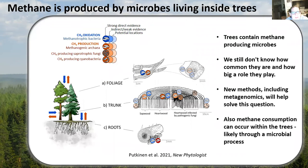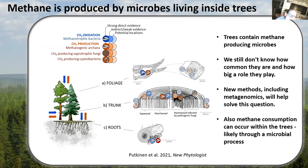Finally, beside methane being produced in soil and exported through trees, and methane produced with sunlight in foliage, we also know that methane is produced by microorganisms that live within trees. These methane-producing microorganisms can be found in the hardwood of trees, particularly in trees that have been infected by pathogens. Interestingly, we have found very similar microorganisms in the foliage of trees. We don't yet know how common they are or how big a role they play, but we are working hard to develop new methods, including captured metagenomics, to help us answer this question.